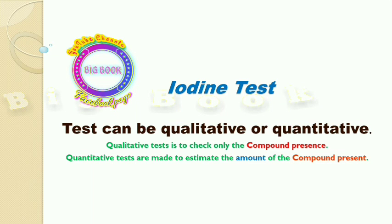Hello guys, welcome to Big Book. In the slides we are going to discuss about the iodine test, which is a biochemical test and also a qualitative test, not a quantitative test. Qualitative tests check only the presence of a compound, whereas quantitative tests are made to estimate the amount of the compound present.